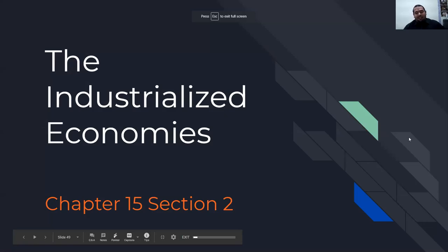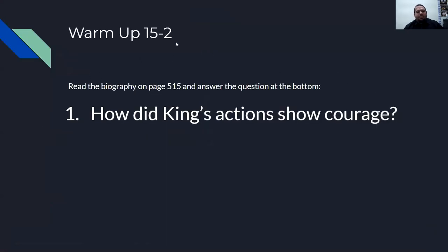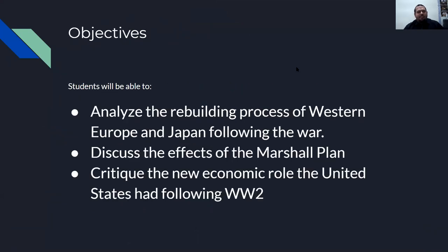I believe this lecture is fairly shorter than the last one, although we'll see. So: The Industrialized Economies, Chapter 15, Section 2. Your objectives: you'll be able to analyze the rebuilding process of Western Europe and Japan following the war, discuss the effects of the Marshall Plan, and critique the new economic role for the United States following World War II.